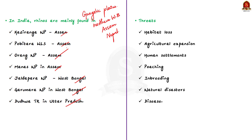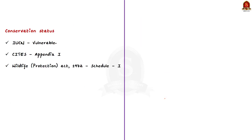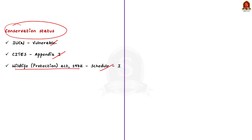Some of the threats for rhinos include habitat loss, agricultural expansion, human settlements and, most importantly, poaching. Asian rhinos mainly survive in isolated areas in small populations that are at greater risk from inbreeding, natural disasters and disease. The most important point from prelims perspective is to know the conservation status. The IUCN status of one-horned rhinos is Vulnerable. It is also protected under Appendix I of CITES and is listed in Schedule 1 of the Wildlife Protection Act 1972.